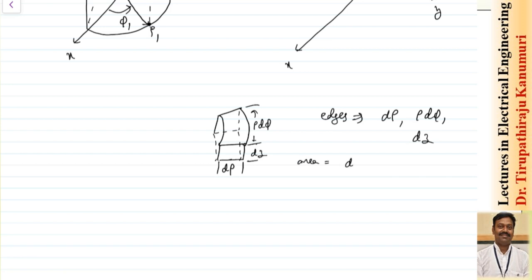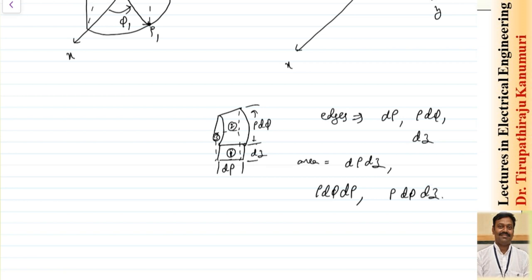For the differential areas: the side surface has area d_rho × d_z; the top or bottom surface has area rho·d_phi × d_rho; and the curved side surface has area rho·d_phi × d_z. For the differential volume, multiply all three edge lengths: d_v = d_rho × rho·d_phi × d_z = rho·d_rho·d_phi·d_z. Once you understand the basics, you do not need to memorize these — you can draw and derive everything in the exam.